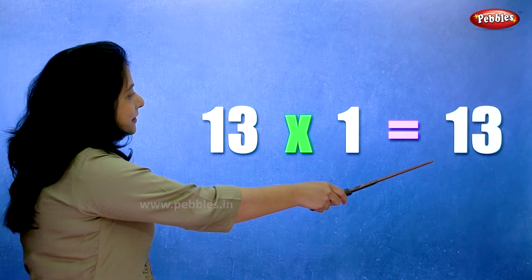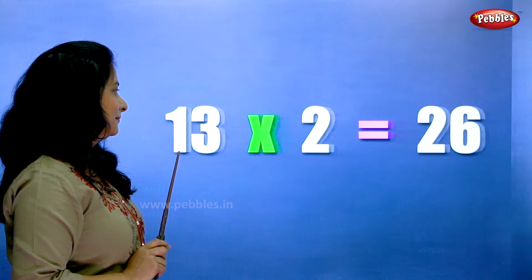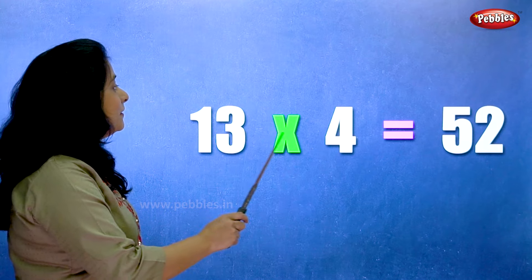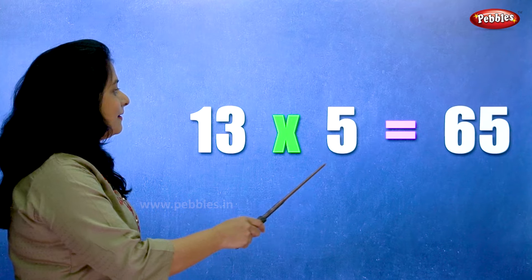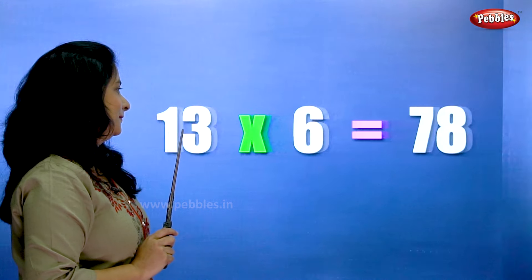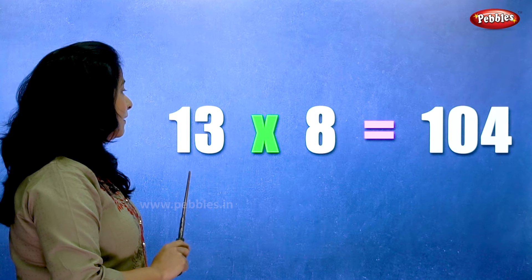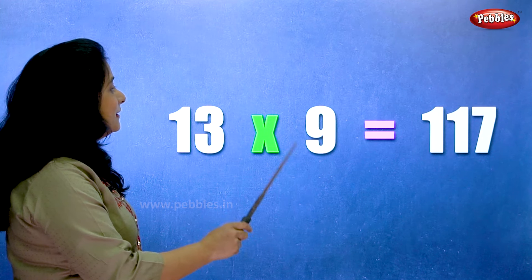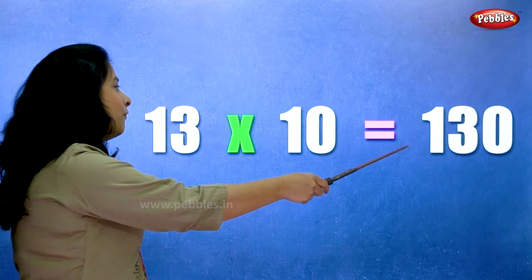Thirteen ones are thirteen. Thirteen twos are twenty-six. Thirteen threes are thirty-nine. Thirteen fours are fifty-two. Thirteen fives are sixty-five. Thirteen sixes are seventy-eight. Thirteen sevens are ninety-one. Thirteen eights are hundred and four. Thirteen nines are hundred and seventeen. Thirteen tens are one-thirty.